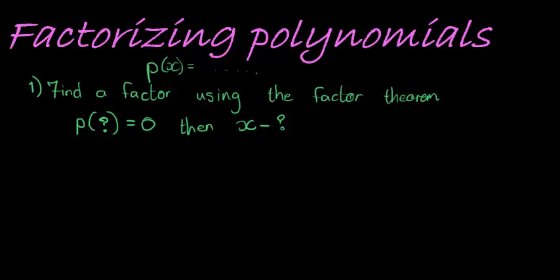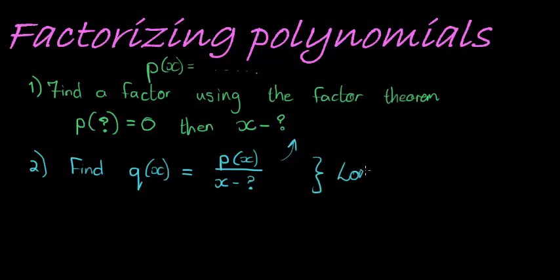In my second step, what I'm going to do is use this factor to find the quotient. So I'm going to find Q, and Q will be the result of taking my polynomial and dividing it with this factor that I found in the previous step. I will have to use long division for that, no other way but using long division.